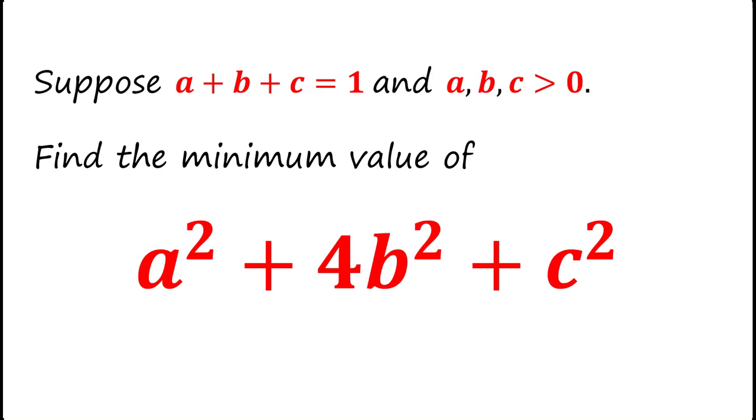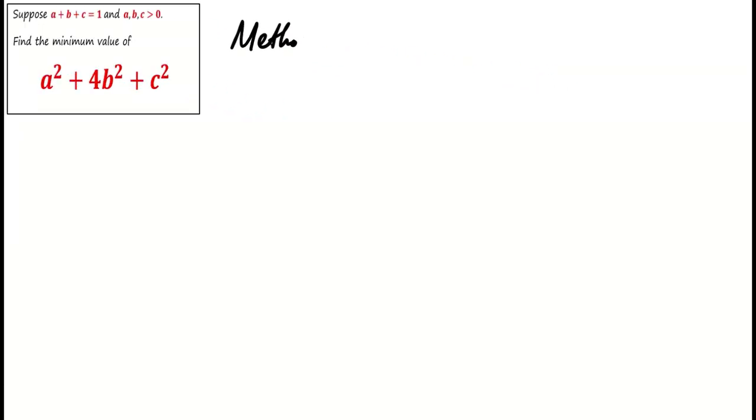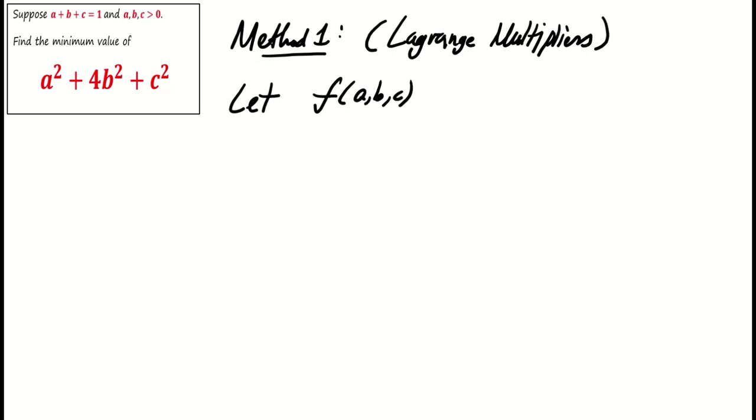We'll present three different methods to solve this problem. Method one involves the Lagrange multiplier, approaching the problem as a constraint optimization issue. Here, our objective function is f of a, b, c equals a square plus 4b square plus c square, with the constraint g of a, b, c equals a plus b plus c minus 1, and it is 0.